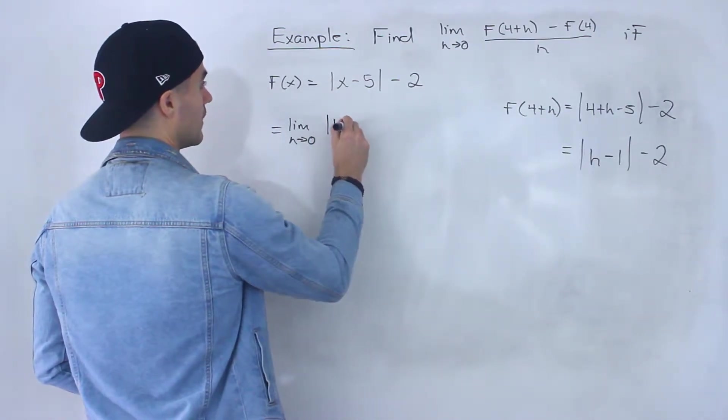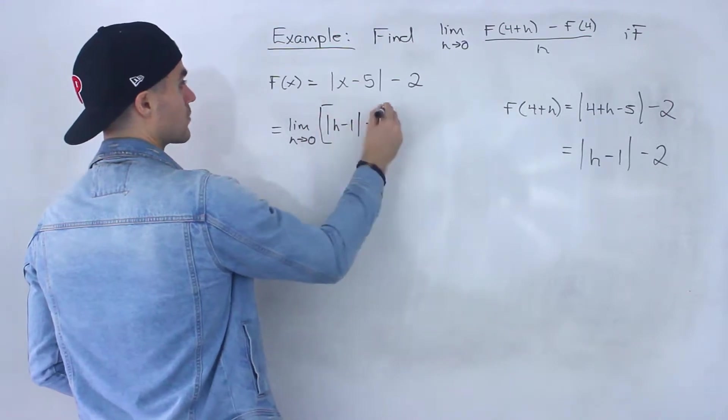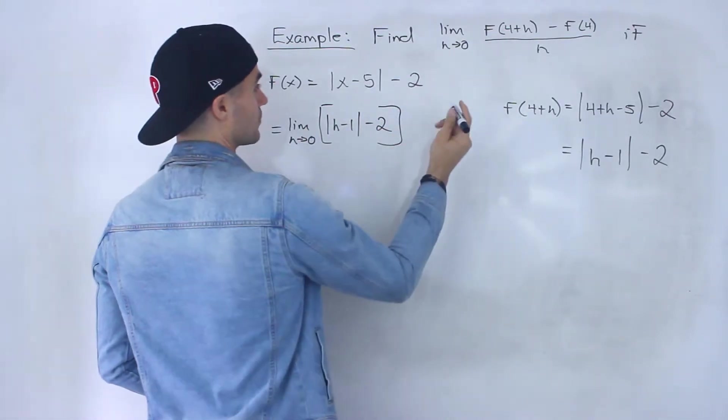So I'm going to plug that in here. I'll put this in square brackets. This is f(4+h).